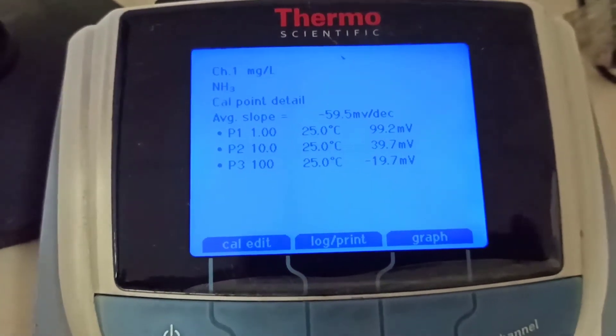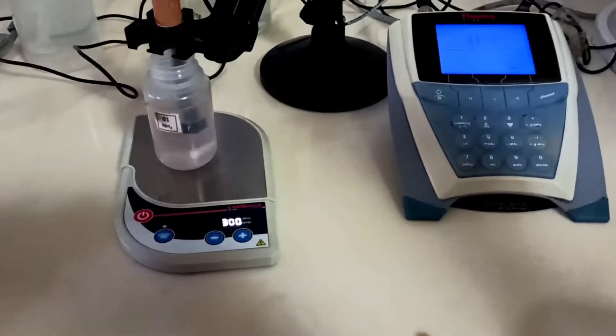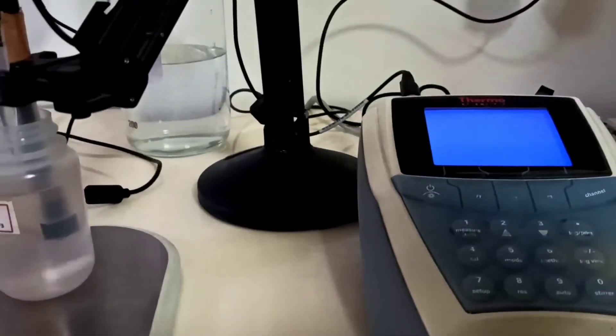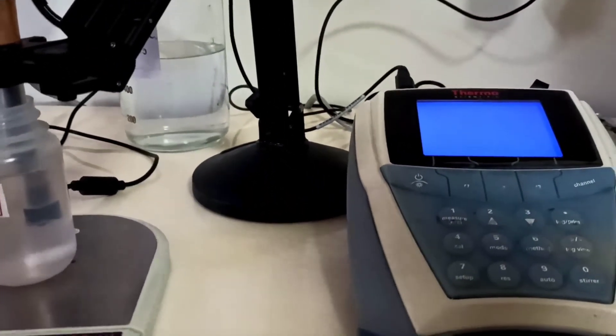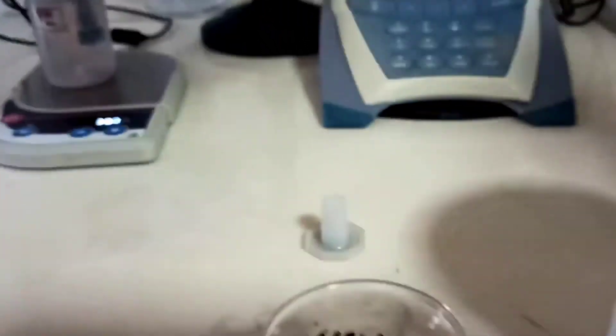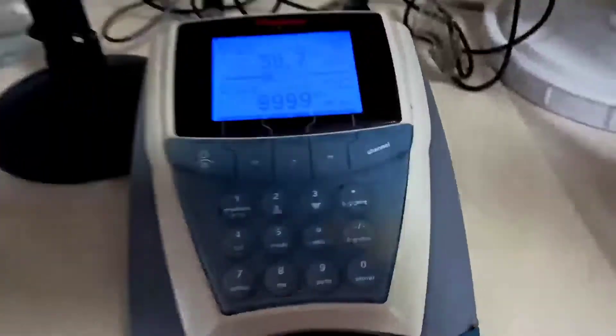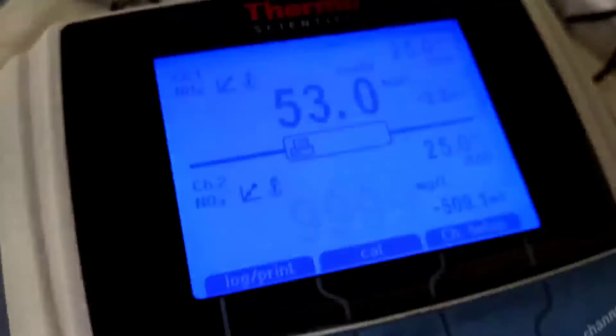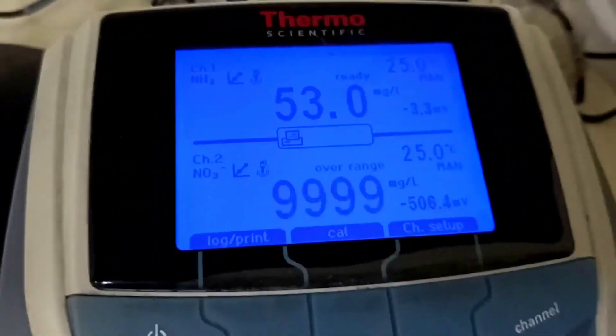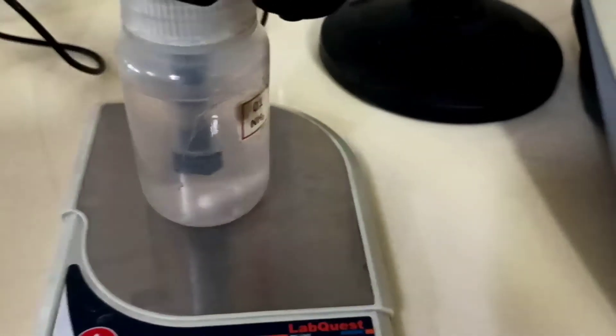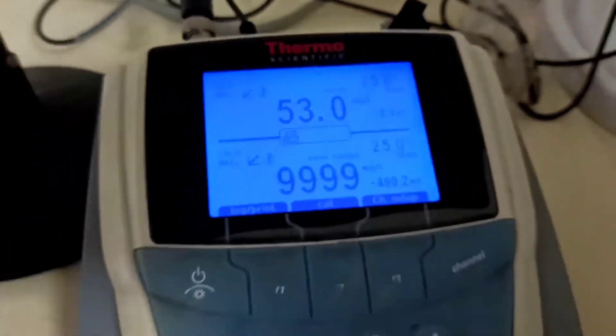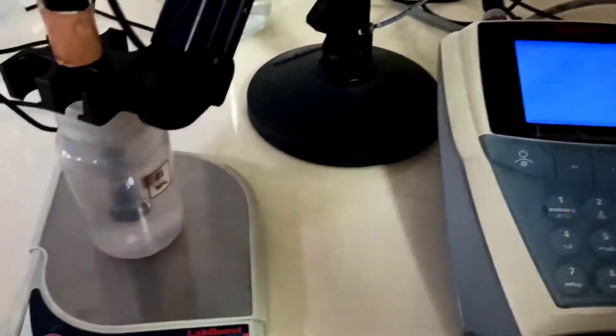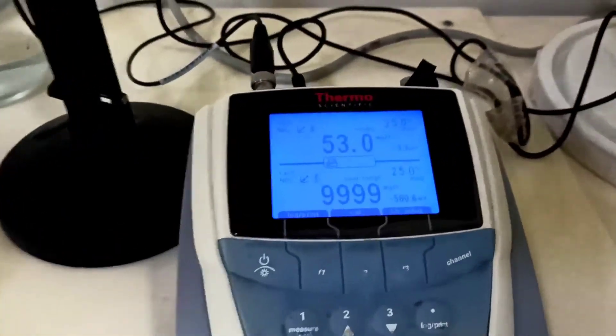Now move to our sample. In the sample process, again we take 100 ml sample and add 1 ml buffer. We put our sample in the magnetic stirrer and it's under process. This is an oil sample, so the ammonia content is too much high. 51, 52.1 - it's under stabilizing process. When it shows ready, that means this is the final result. The instrument shows ready and the final result is 53.0. Please subscribe our channel for getting more videos on analytical instruments.